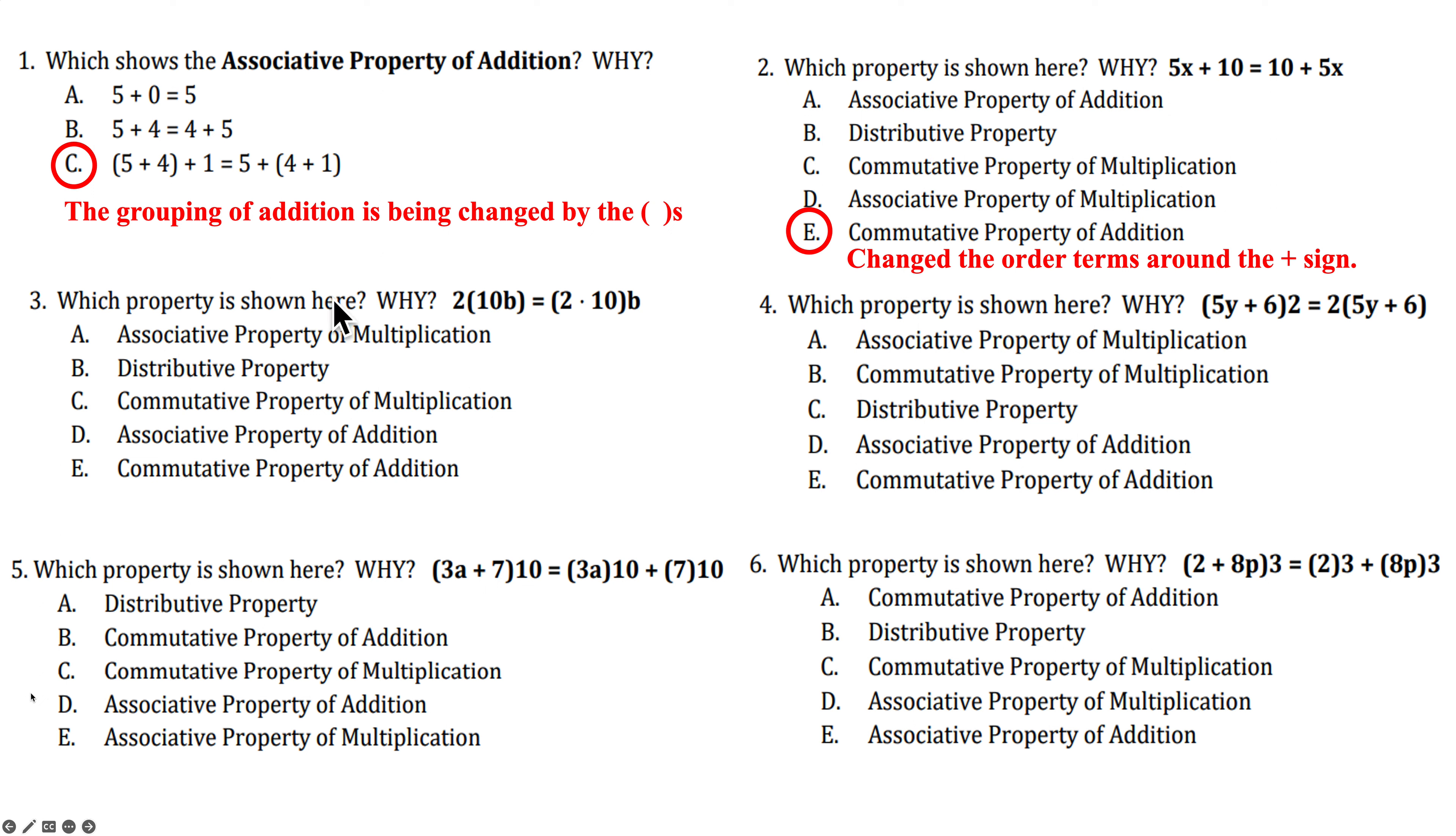All right, number three. What's the property shown here and why? Okay, let's see. We have 2, 10, B. Everything's being multiplied. 2 times 10, B. Notice the order's the same, but again, the parentheses are changing around a different multiplication symbol. So this is the associative property of multiplication. Again, grouping multiplication is changed by the parentheses. Number four. Let's see. Well, we have parentheses. Parentheses are around 5Y plus 6, then times a 2. Now it's 2 times the same binomial 5Y plus 6. So what we are doing here is we're physically changing the order of the parentheses and the number 2 around a multiplication symbol. So that's our commutative property of multiplication.